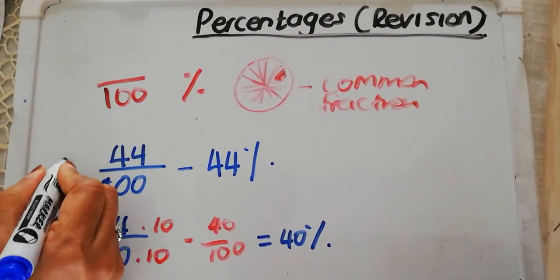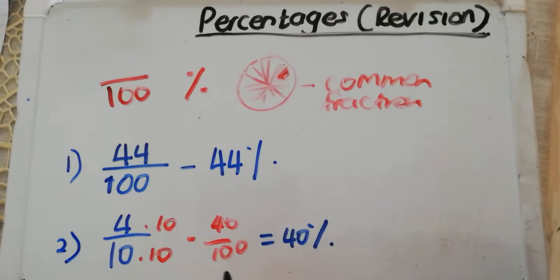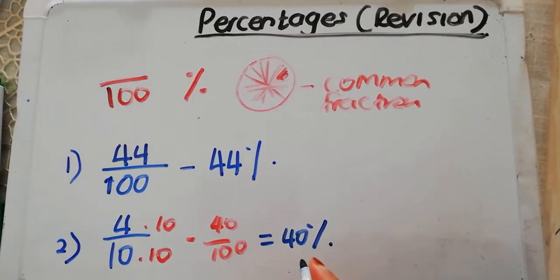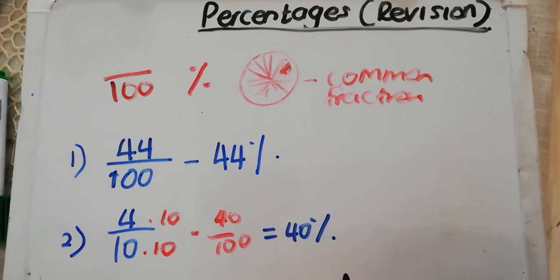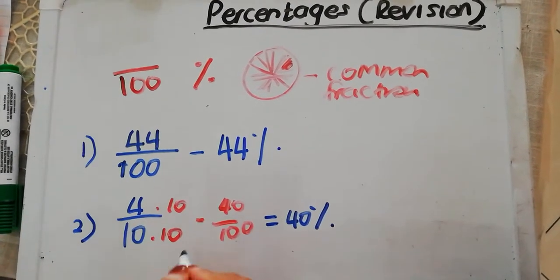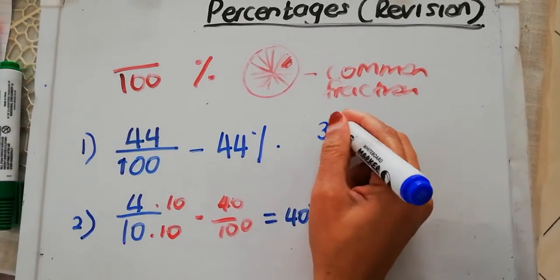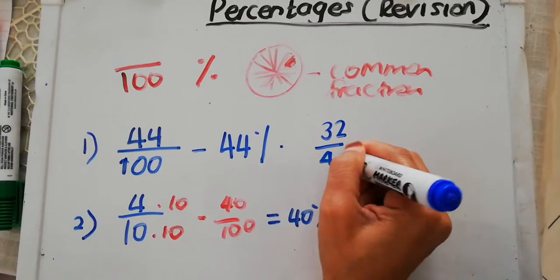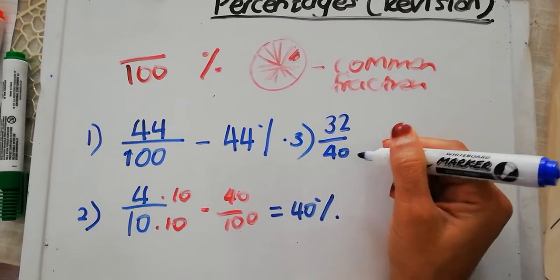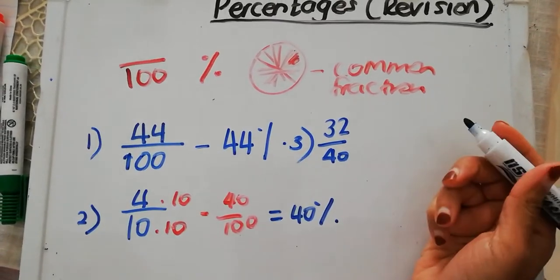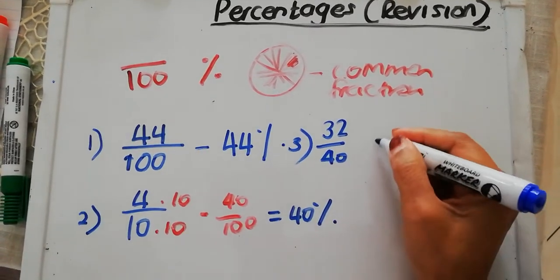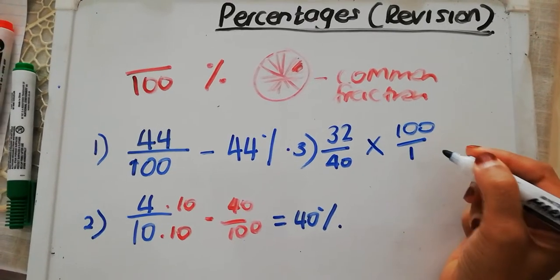That's scenario 1, that's scenario 2, but now what happens if my denominator is not something where it can be multiplied into 100 so easily? What if I had 32 over 40? So this is scenario 3. Now I can't multiply 40 by anything to make it 100. So what do I do in that case? I say, let me multiply it by 100 over 1.